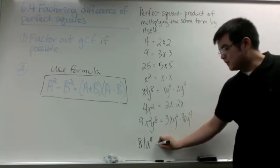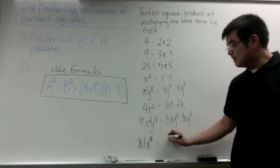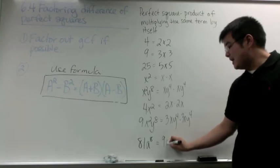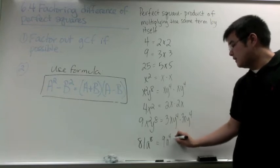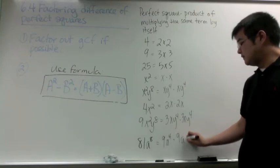And the last one: 81a to the 8th is a perfect square because 9a to the 4th times 9a to the 4th.